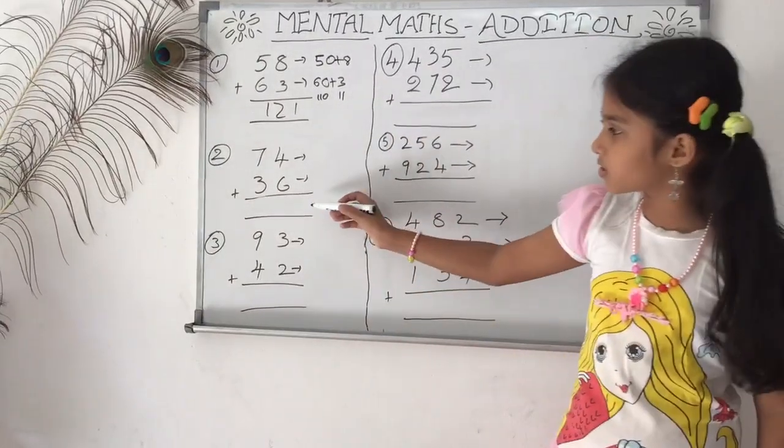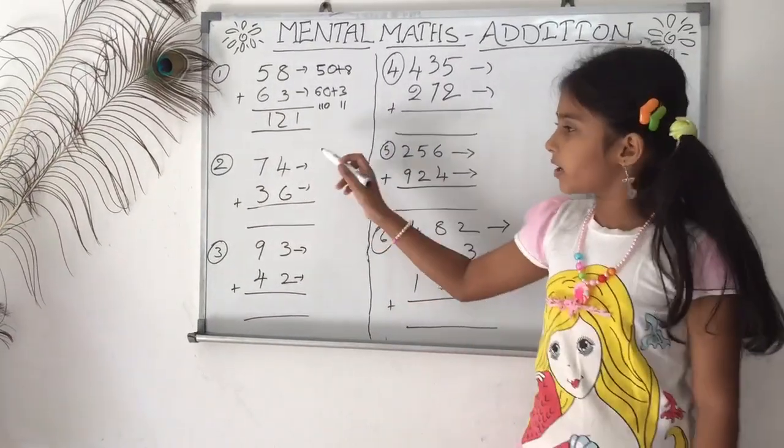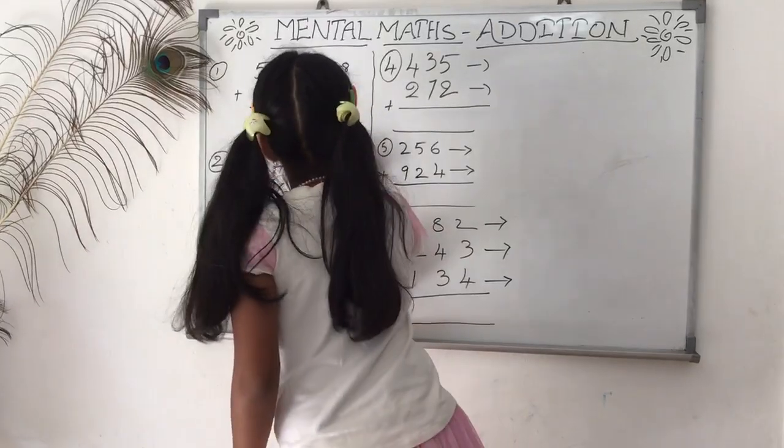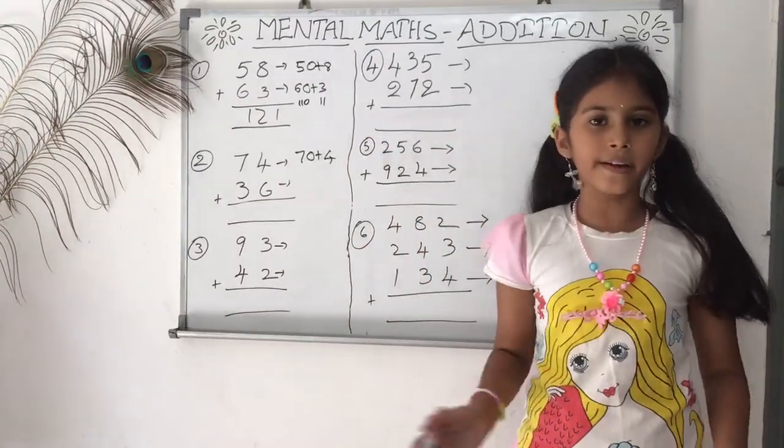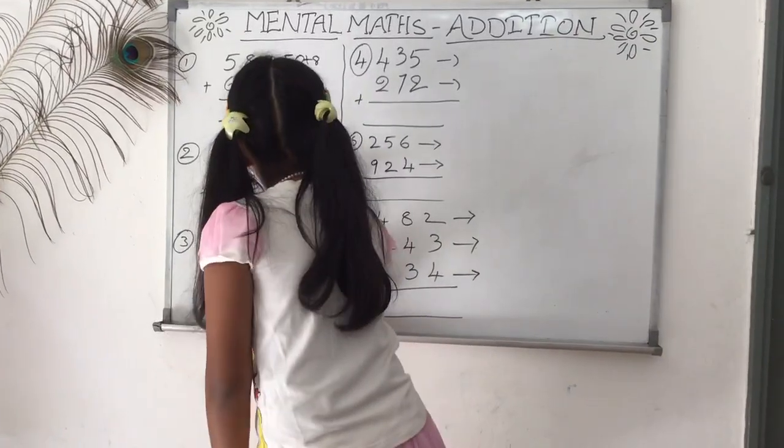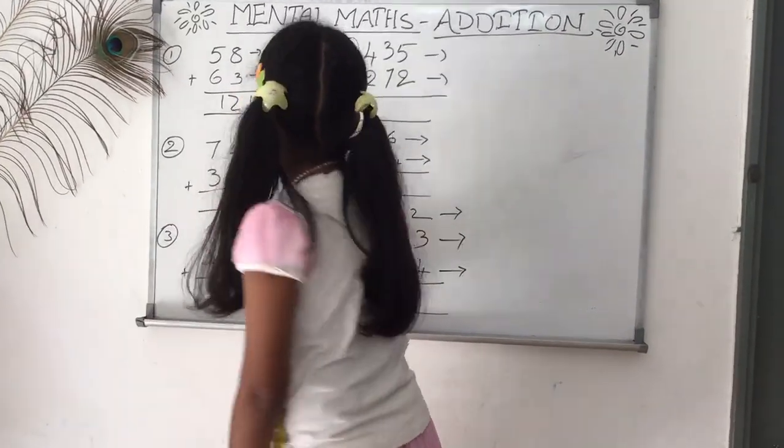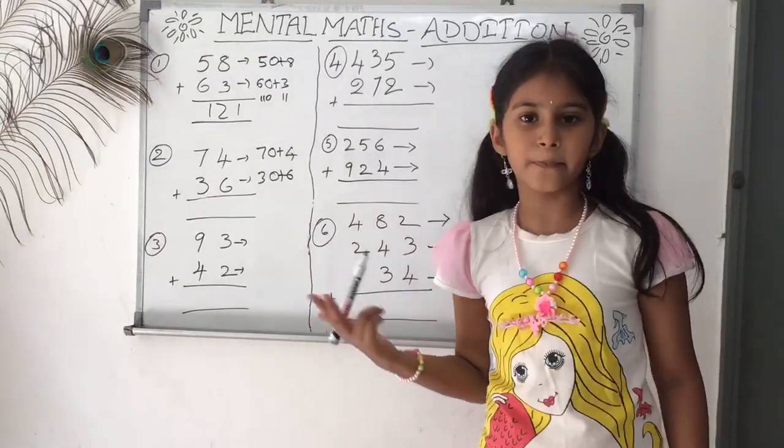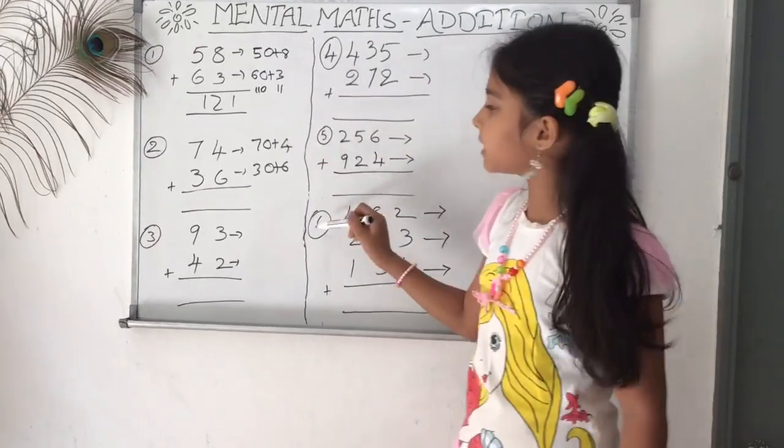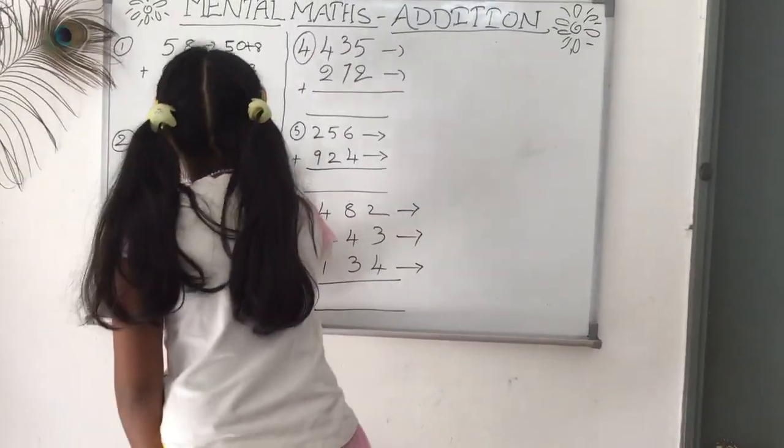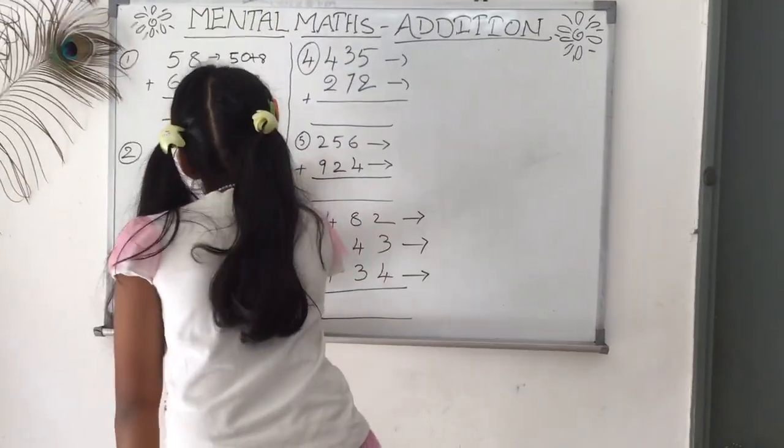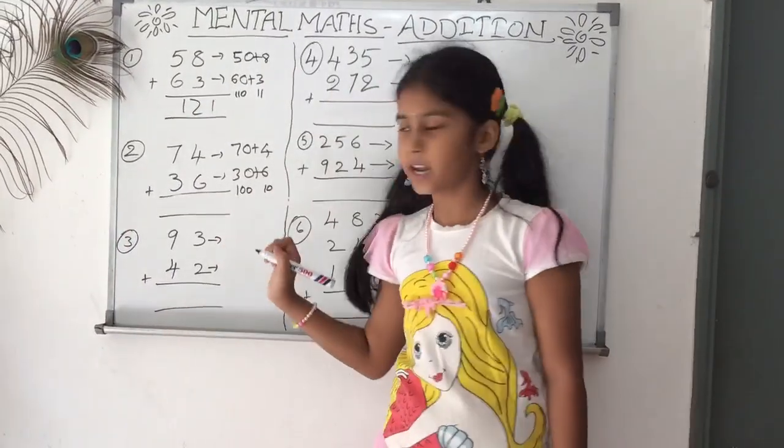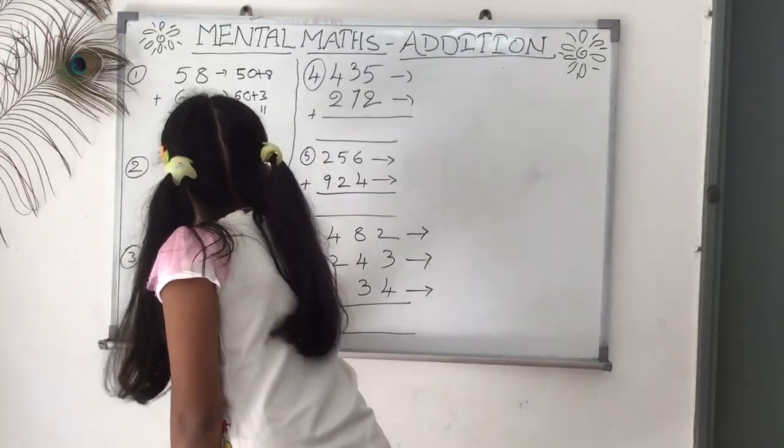So the next question is the same like this. 74 is nothing but 70 plus 4. 36 similarly is nothing but 30 plus 6. Now the second step we need to do is add 70 plus 30, which we get 100. 4 plus 6, we get 10. So 100 plus 10, we get 110.